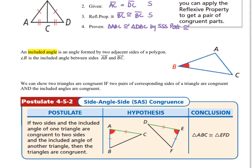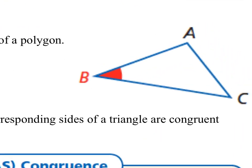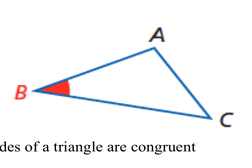An included angle is an angle that is formed by two adjacent sides of a polygon. Looking at this triangle, we see that segment AB and segment BC create angle B. That is called the included angle, because it is formed by those two segments.